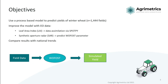So our objectives today are to take a process-based model called WoFost and use it on a small subset of fields — 1,444. Later on we're going to take this process-based model and supplement it with earth observation data. We're going to use leaf area index for some data assimilation and then we're also going to use synthetic aperture radar in a more traditional machine learning approach.